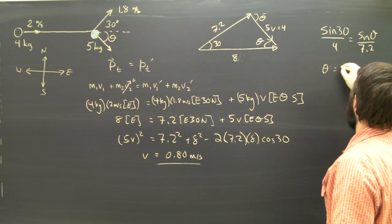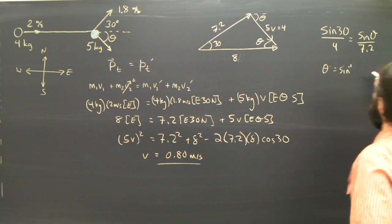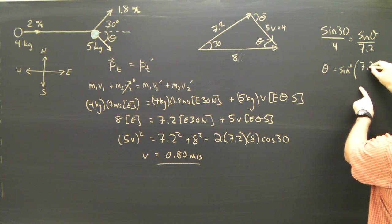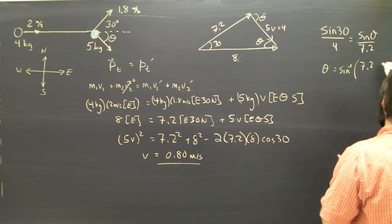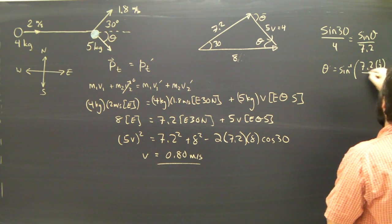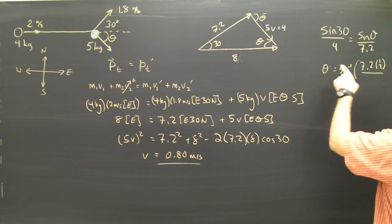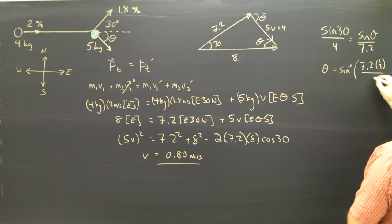Rearranging for theta, I find that it is the inverse sine of 7.2 times the sine of 30, which I happen to know is a half. Hopefully you do as well. Times a half. 7.2 times a half divided by 4.